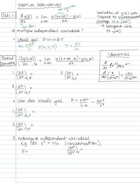What happens when we have multiple independent variables? You've already seen many equations like this — PV equals nRT for the ideal gas law, for example. So we can write some functions for this. We can say that P equals nRT over V, and P is thus a function with the three independent variables n, V, and T.